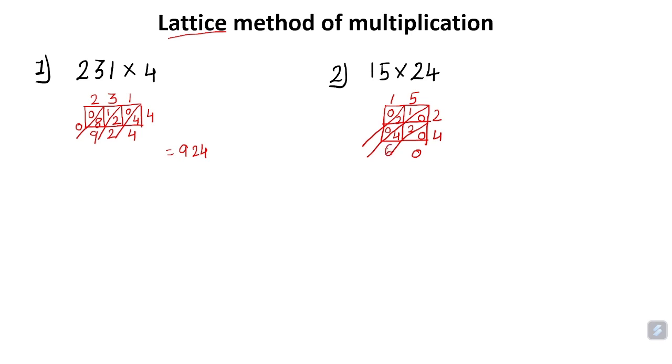Below this diagonal line we have 0. Here we have 4, 2, and 0: 4 + 2 = 6, and 6 + 0 = 6. Next we have 0, 2, and 1: 2 + 1 = 3, plus 0 = 3. And here we have 0. So our answer is 360.